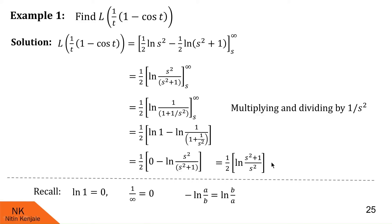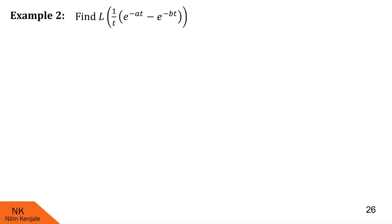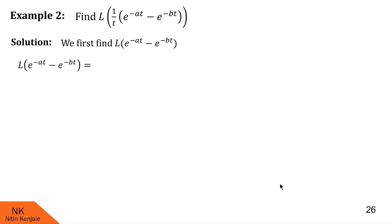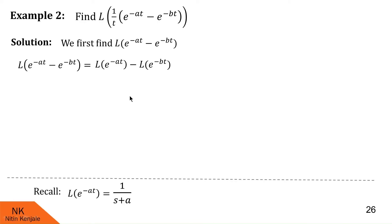I hope you understood that example. Now let us proceed to the next one: find Laplace of (1/t)(e^{-at} - e^{-bt}). Here f(t) = e^{-at} - e^{-bt}. Using the linearity property, Laplace of f(t) = Laplace of e^{-at} minus Laplace of e^{-bt}. Recall that Laplace of e^{-at} = 1/(s + a) and Laplace of e^{-bt} = 1/(s + b). We call this φ(s), so φ(s) = 1/(s + a) - 1/(s + b).